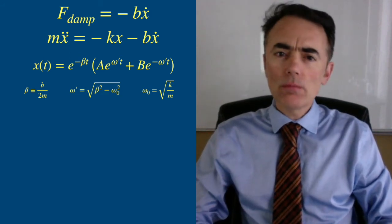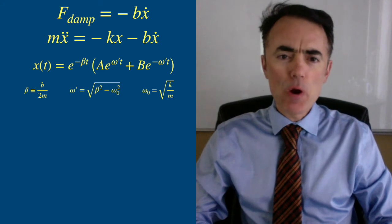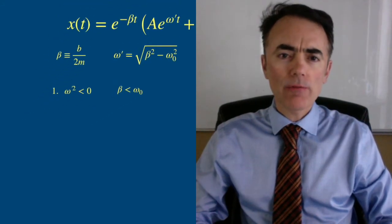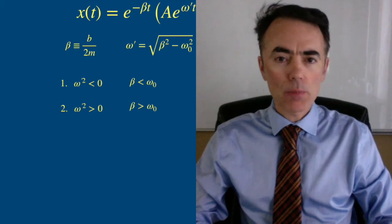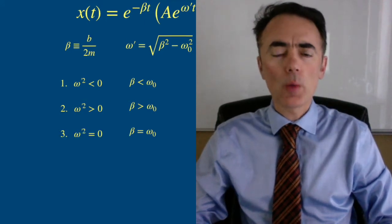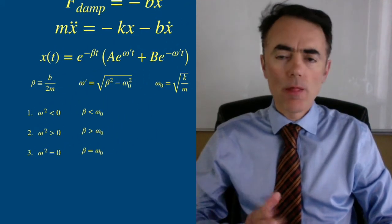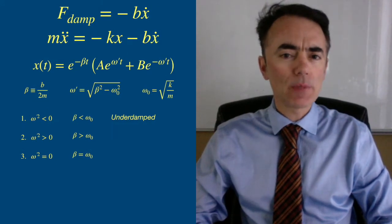We saw there are three cases of damped motion. One for when omega squared is negative, one for when omega squared is positive, and one for when omega squared is zero. The first case was the underdamped harmonic motion.